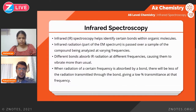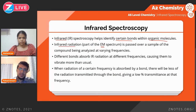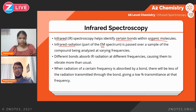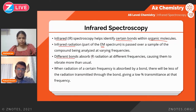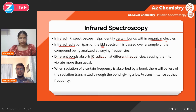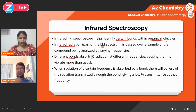Infrared spectroscopy is usually done using infrared radiation, which is part of the electromagnetic spectrum with a frequency just lower than visible light. Infrared radiation is used to bombard molecules with certain bonds. This causes certain vibrations within these molecules, and that is what we detect and what helps us determine structures.